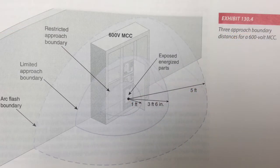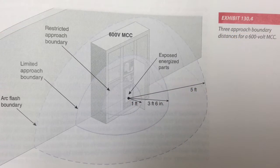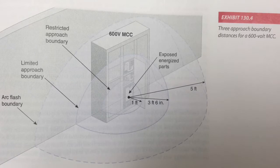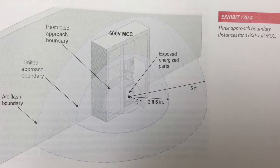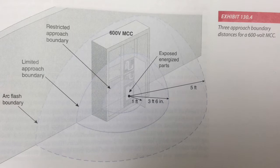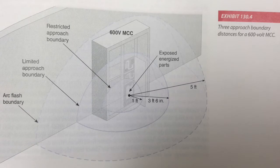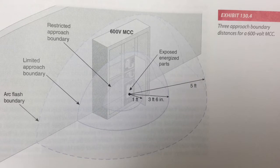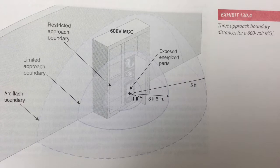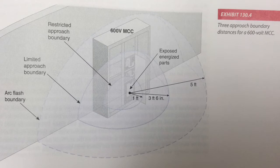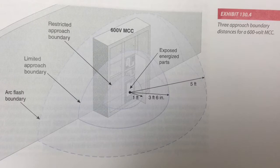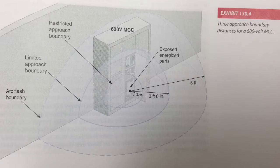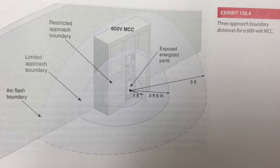This picture shows the approach boundary distances for a 600-volt MCC. The arc flash boundary is the distance at which the incident energy equals 1.2 cal, which is expected to limit your injury to one that is recoverable and non-permanent. This does not necessarily mean that an injury at this energy level will not result in hospitalization. The arc flash boundary is 5 feet, the limited approach boundary is 3 feet 6 inches, and the restricted approach boundary is 1 foot.